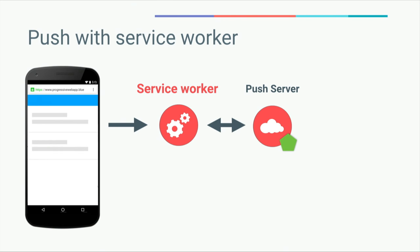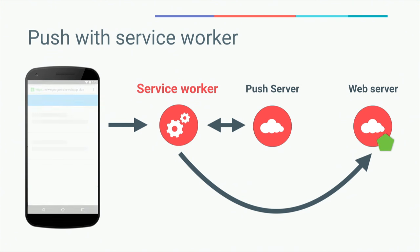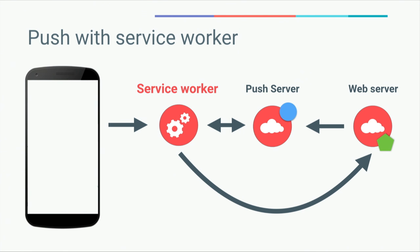Finally, push notifications with service workers. You tell your service worker to subscribe to a push server. The push server generates an endpoint and encryption keys — the endpoint is like a magic URL that, when your back end sends a request to it, triggers an event in the user's client service worker. The push server passes the endpoint and encryption keys to your service worker, which you send up to your web server. When you have a notification to send, you encrypt it with the given keys and make a request to that endpoint. That sends the encrypted data to the push server, which wakes up the device and fires an event into your service worker running in the background. The service worker receives the decrypted payload and uses the Notifications API to show the notification to the user.